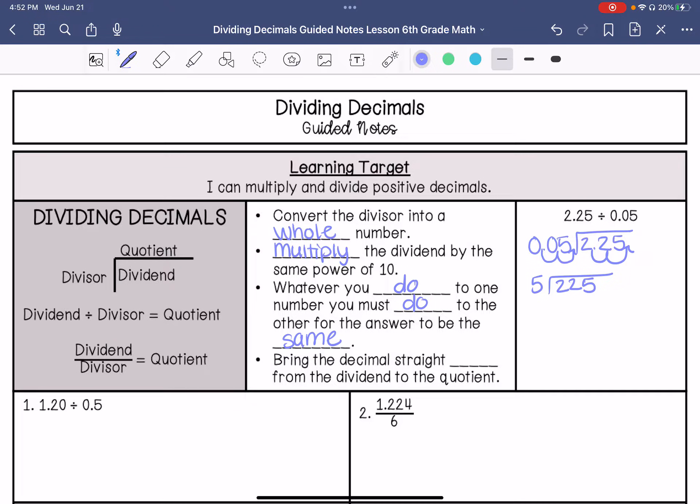So your decimal is right here. In your quotient, after you divide, you will bring the decimal straight up. 5 cannot go into 2. It goes into 22 four times. 5 times 4 is 20. Bring that 5 down. 5 goes into 25 five times. If I bring that decimal up, my answer is 45. So you would bring the decimal straight up from the dividend into the quotient.